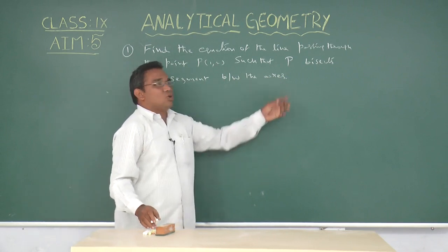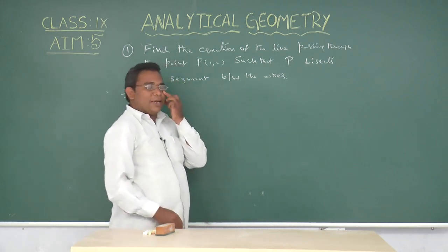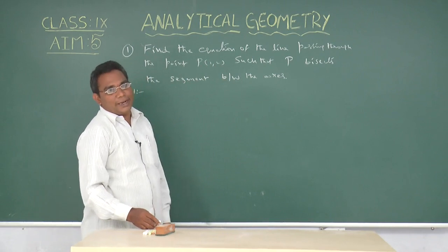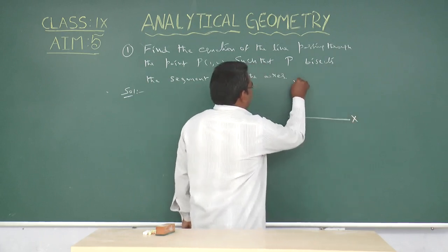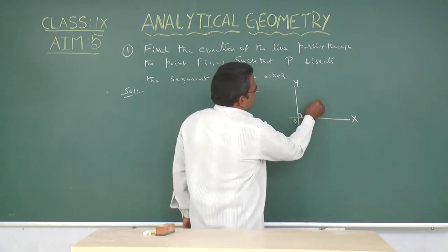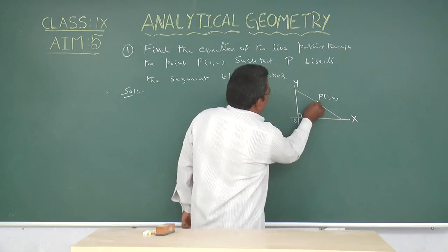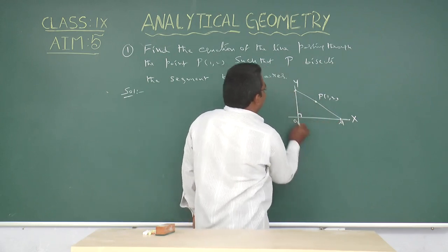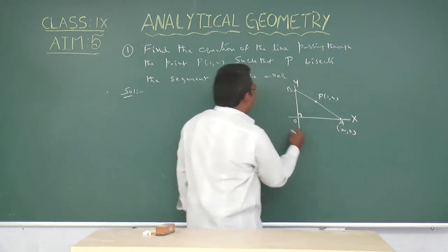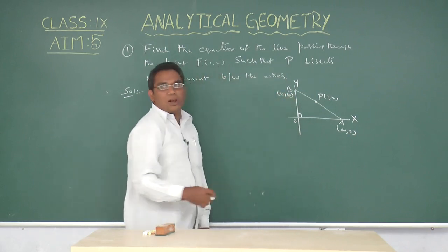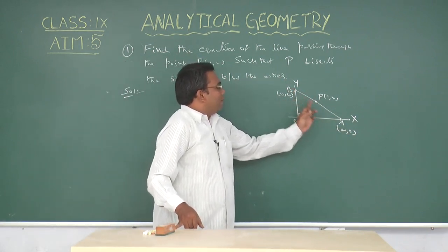Here, axis means coordinate axis. We know that the point capital P (1, 2) lies in the first quadrant, Q1. This is capital P (1, 2). Let the straight line passing through capital P meet the x-axis at capital A and the y-axis at capital B. Let capital A equal to (a, 0) and capital B equal to (0, b). Capital P bisects the segment AB means P is the midpoint of AB.